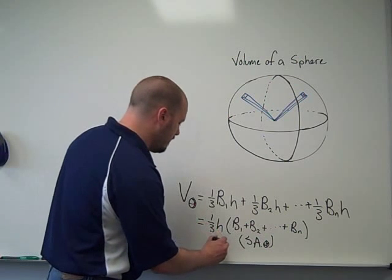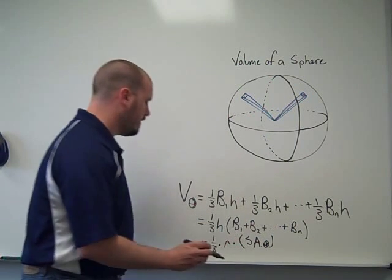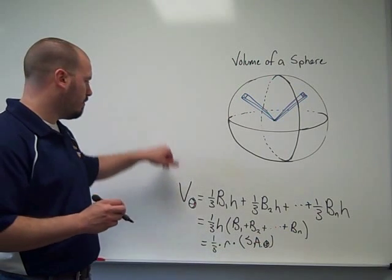And the height, remember we said the height, is just the radius of the sphere. So one-third times the radius times the surface area of the sphere. I'm going to move it up here a little bit.